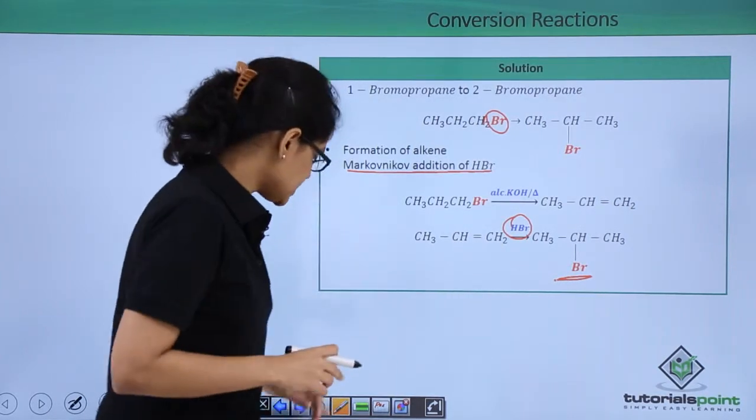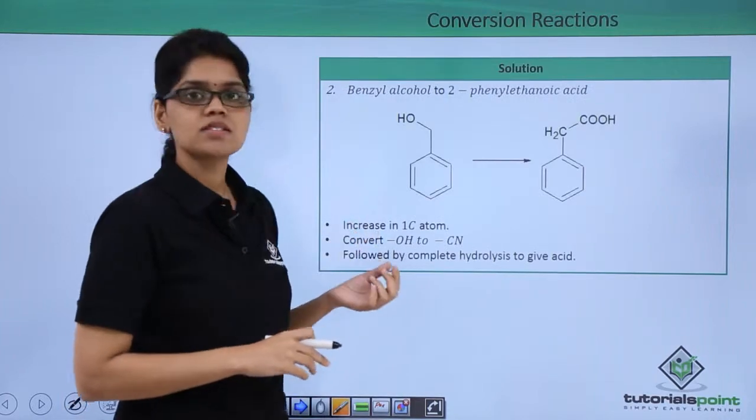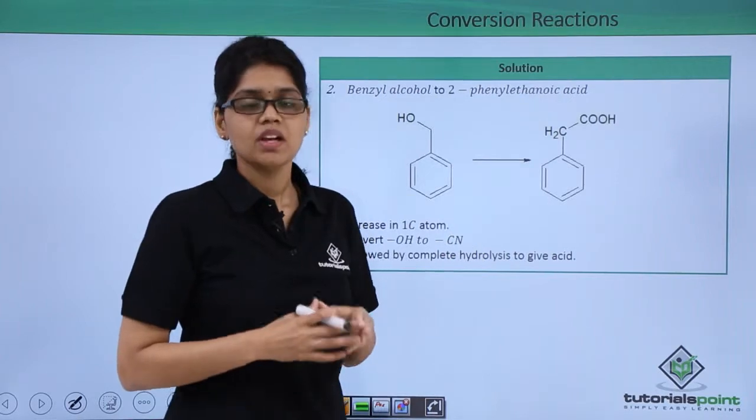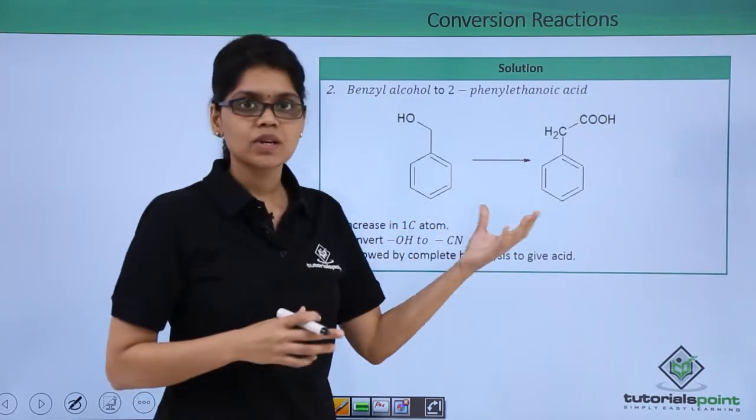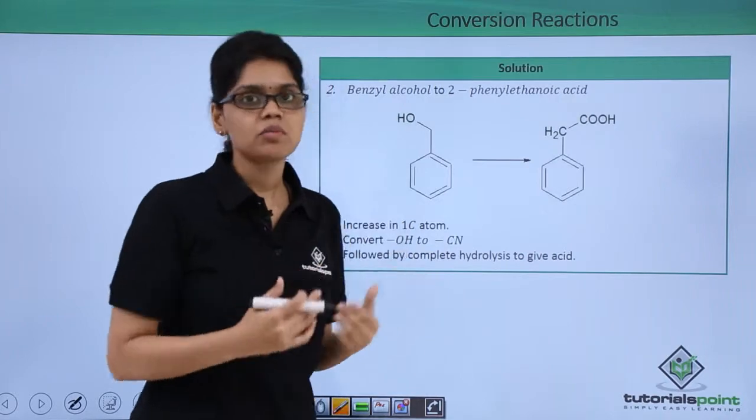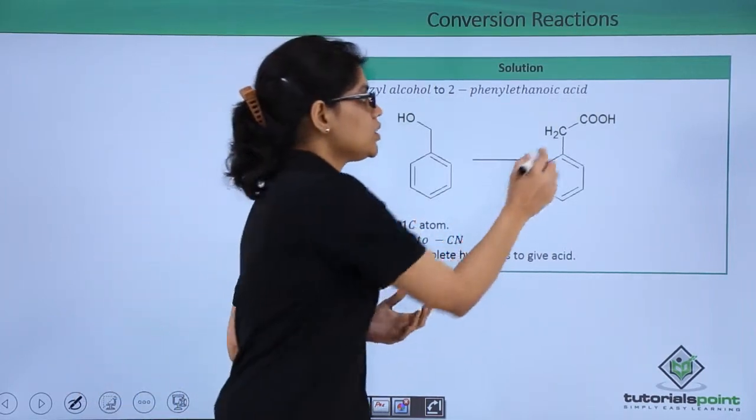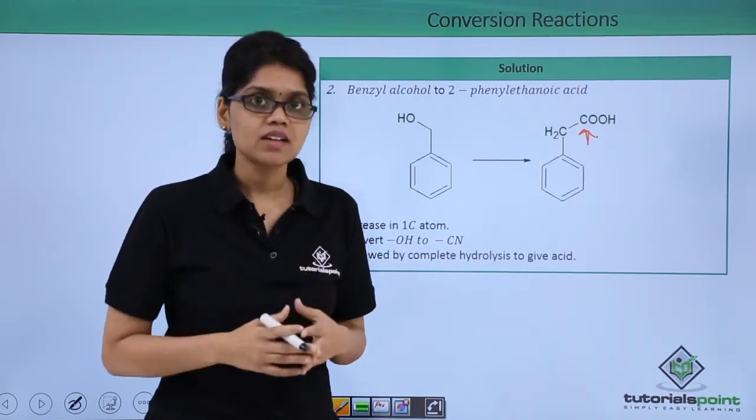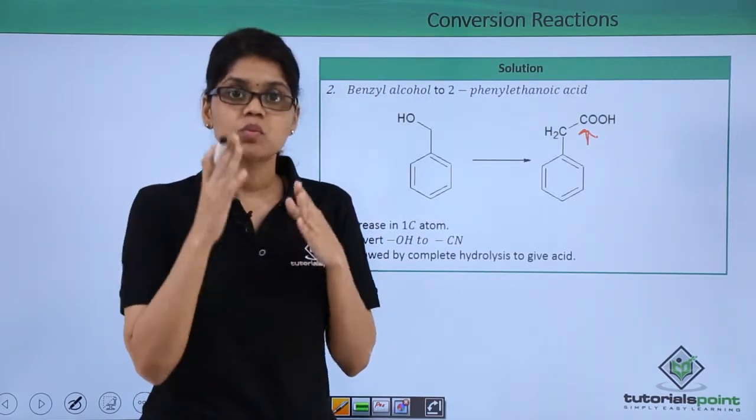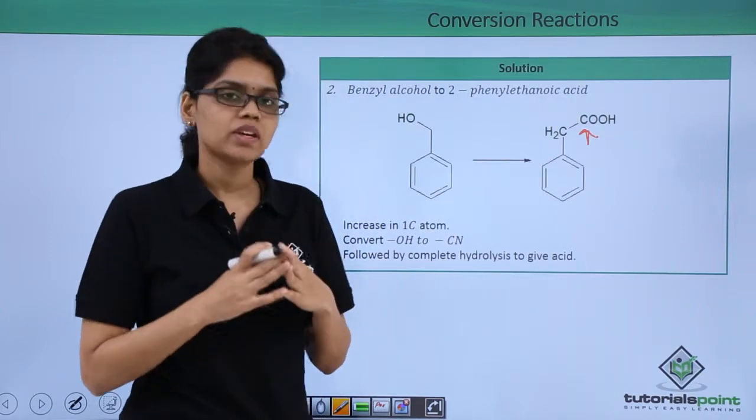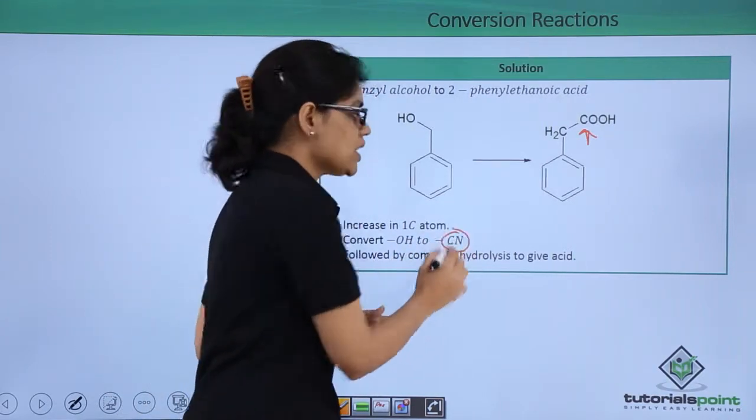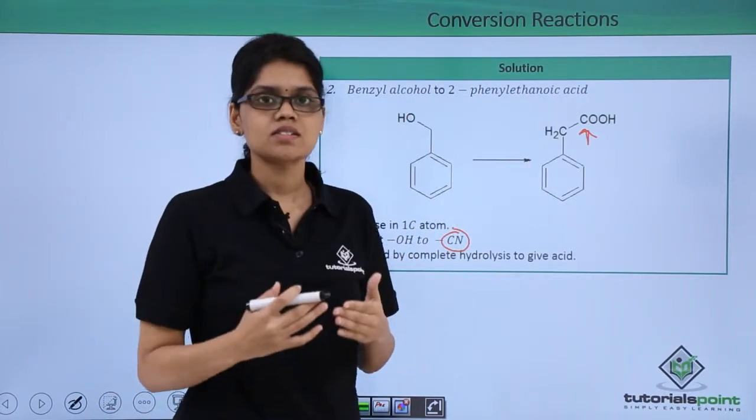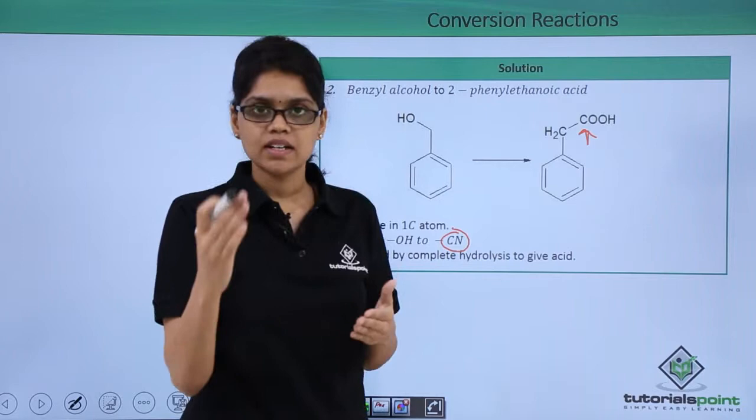In the next reaction the conversion involved is to convert benzyl alcohol to 2-phenylethanoic acid. If you look at the two structures you can see that the product has one carbon more than the starting material. We have already seen that when we need a product with one carbon more than the reactant, we employ the reagent KCN. We need to convert this alcohol to cyanide and then hydrolyze it so that CN gets converted to COOH.